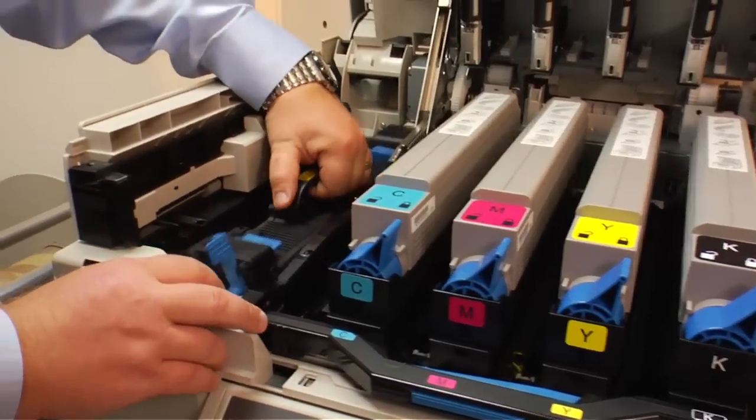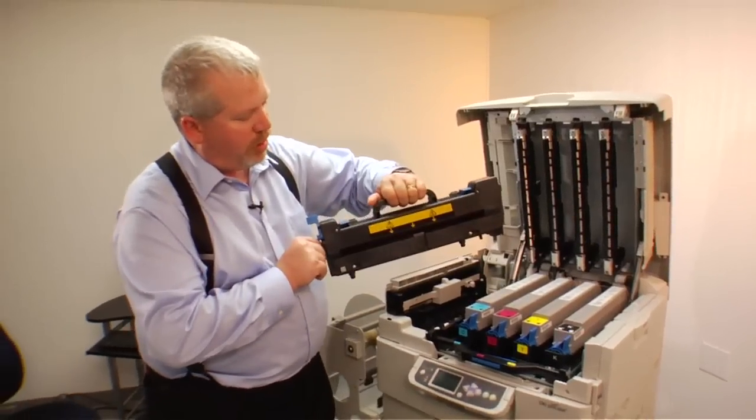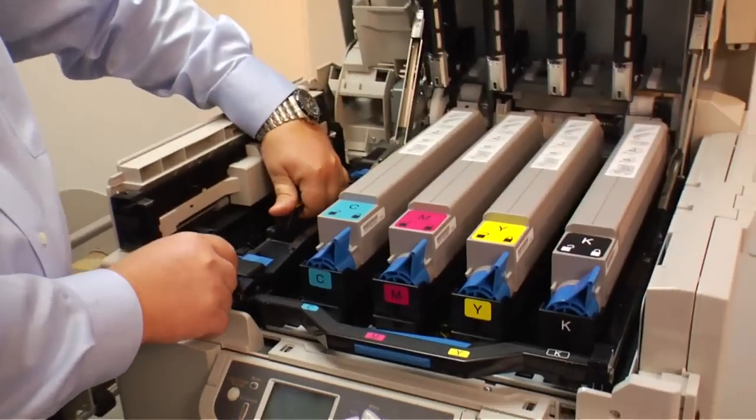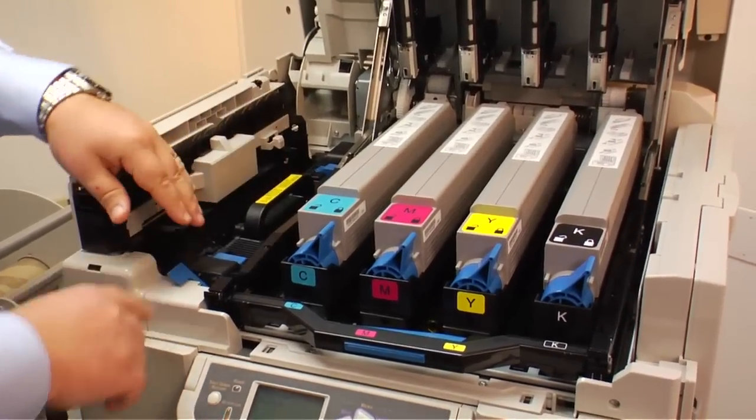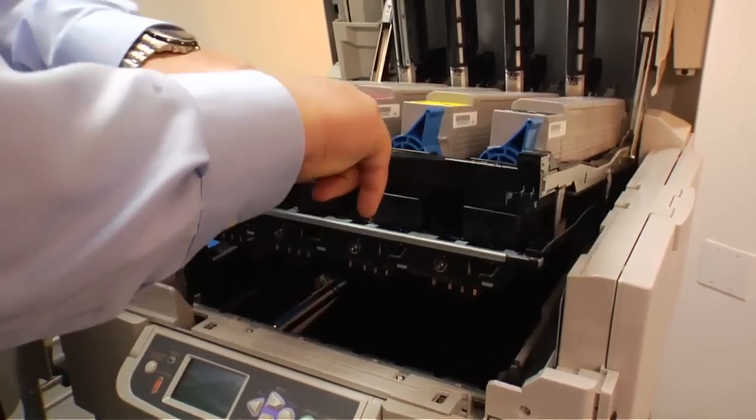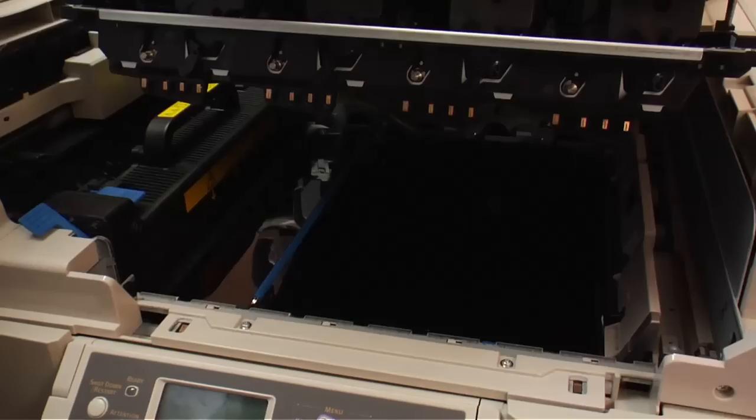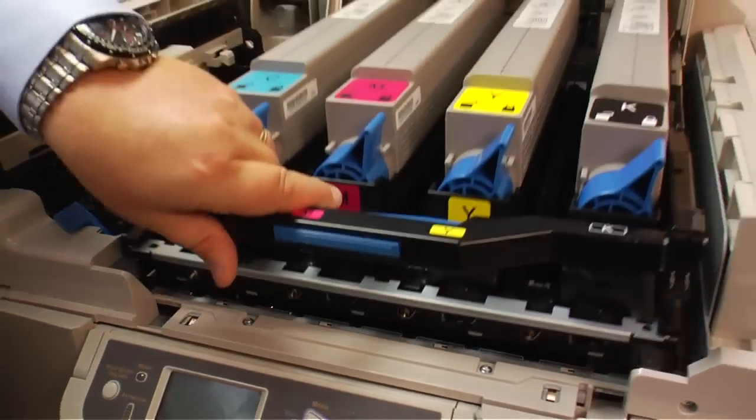The third component or the last component is the fuser. It's rated for about 100,000 impressions. Locks into place. If I pop the cover up you'll see below here, here's the transfer belt. And these are the consumables to the engine itself.